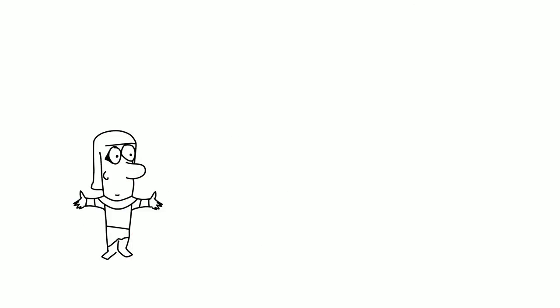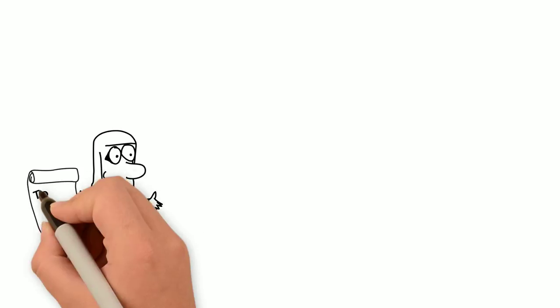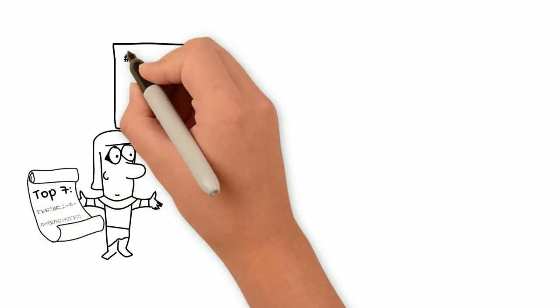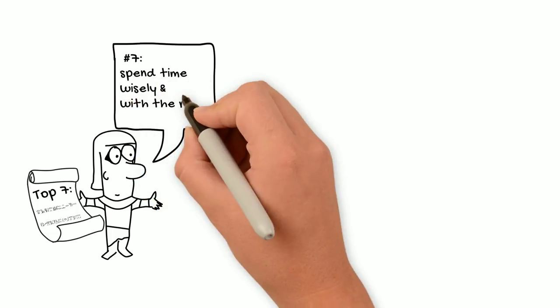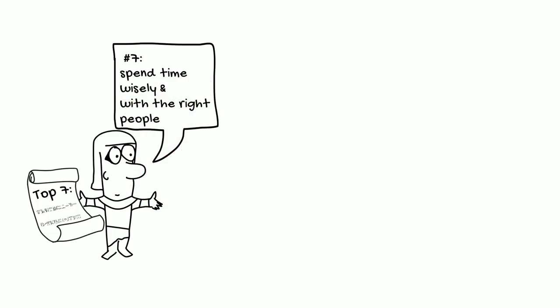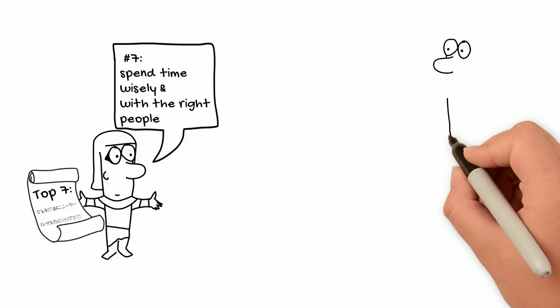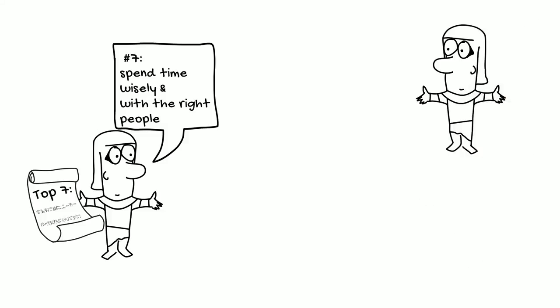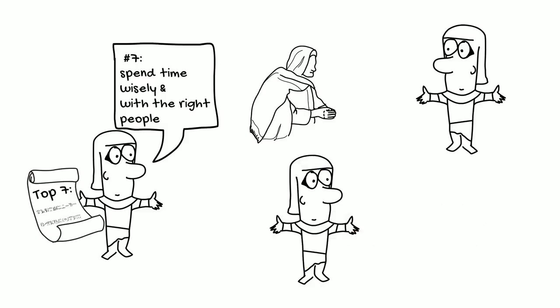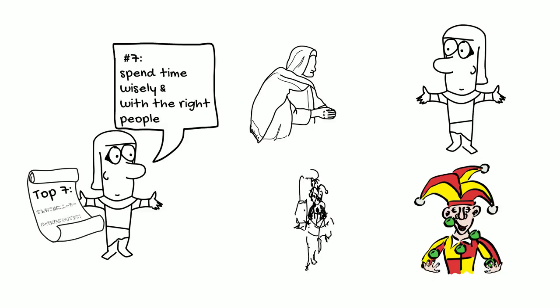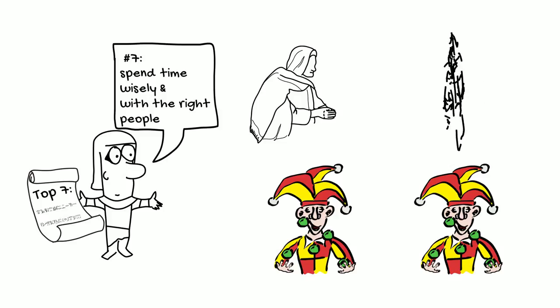Our seventh and final resolution is to be more selective about how you spend your time and who you spend it with. Surround yourself with people who are the way that you strive to be. Again, Ankhsheshonq perhaps puts this most succinctly and clearly when he says: Serve a wise man that he may serve you. The friend of a fool is a fool. The friend of a wise man is a wise man.